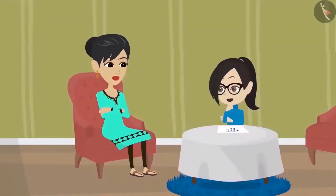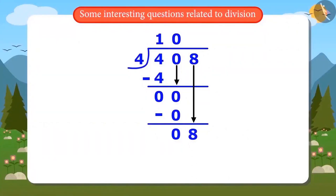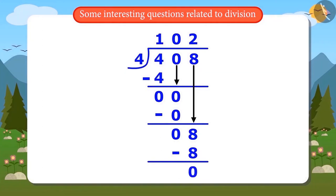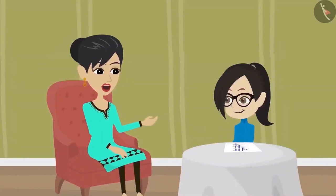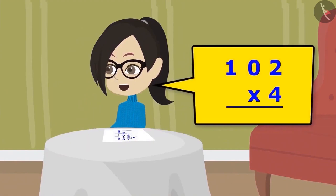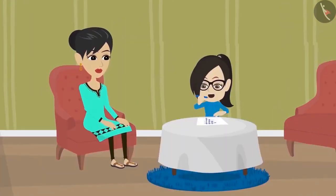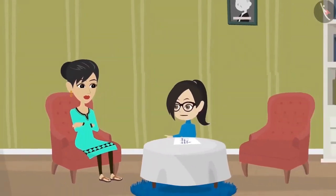Oh! Now I understood. Yes, Vandana — now complete the division to obtain the correct answer. Now write down 8 and divide 8 by 4. The answer is 2 because 4 multiplied by 2 is 8, and the remainder is 0. This means that 408 divided by 4 is 102. Isn't that right, Mother? You check it yourself. I will multiply 102 by 4 — if the answer comes to be 408, then the division is correct. The answer came 408. That means I divided it correctly.